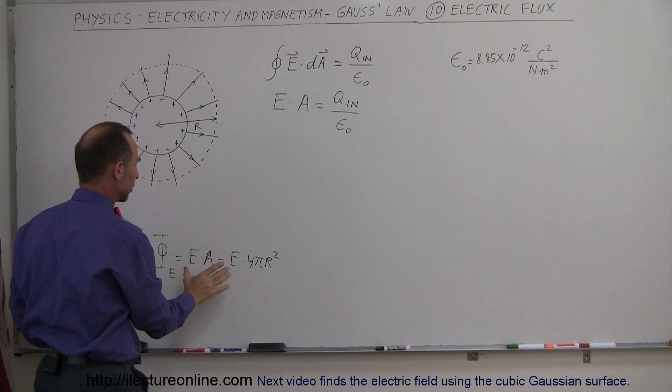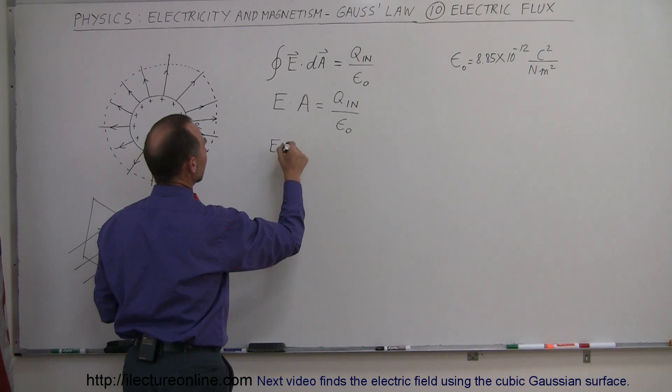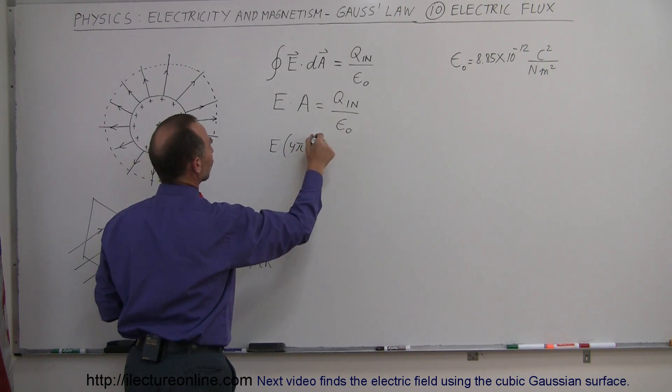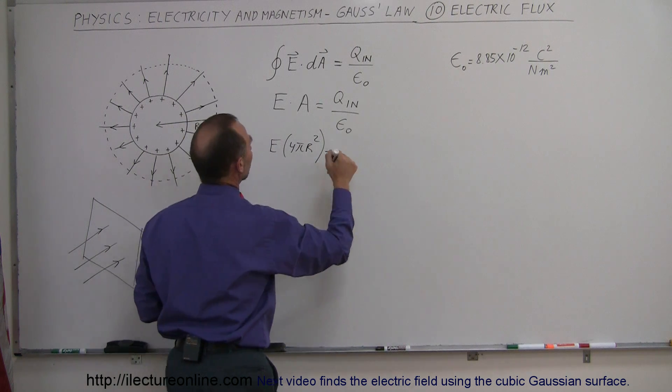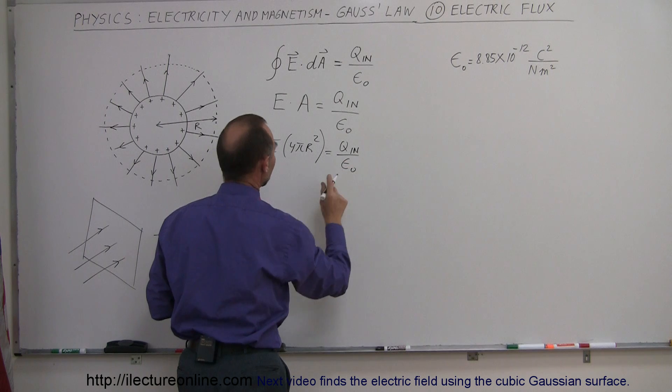And you can see the similarity between this and this, because we can also say here that E times the Gaussian surface, which is 4πr²—oops, I forgot the closing bracket—equals Q inside divided by epsilon naught.